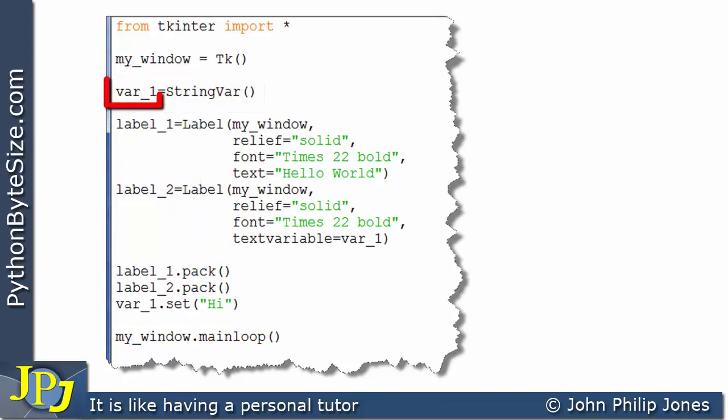Now, because this variable is tied to this label because of this line here, any change to the variable is reflected in this label. So this message is changing the variable to high and the label will reflect this and display high.